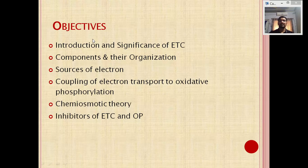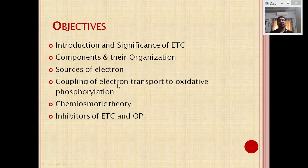The objectives of the lecture are: introduction and significance of the electron transport chain; the components and their organization — which components are involved in the electron transport chain and how they are arranged in the cell; sources of electrons for the electron transport chain; coupling reactions between electron transport and oxidative phosphorylation; chemiosmotic theory for oxidative phosphorylation; and inhibitors of the electron transport chain and oxidative phosphorylation.